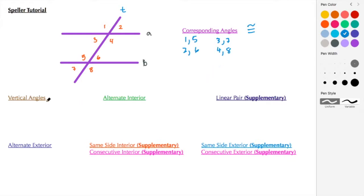Vertical angles are angles that are opposite each other and those angles are also congruent. Here we have 1 and 4, 2 and 3, 5 and 8, and 6 and 7.